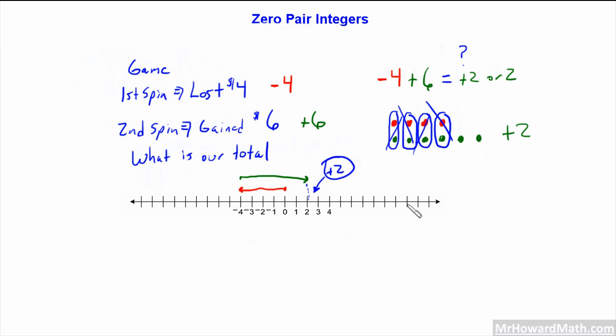With the zero pair method and with the number line method, we got the correct answer. That is an example of using both zero pairs and the number line to attack a specific problem. Hopefully that is making sense to you. We will be using that more as we go forward in future videos. That was just an introduction to zero pair integers. Talk to you soon.